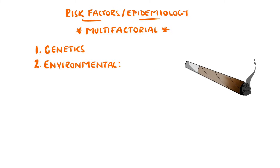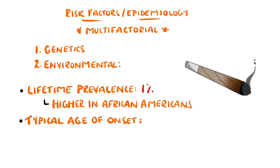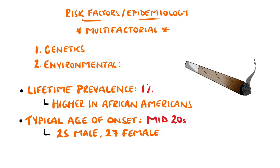The lifetime prevalence is around 1%, and it seems to be more common in those of African-American descent. The typical age of onset is around the mid-20s, with the peak being slightly earlier in males than in females, and it is also slightly more common in males.